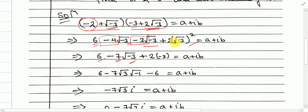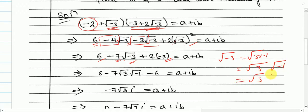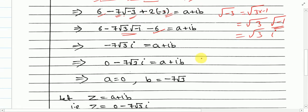And here (√(−3))² simply gives minus 3. Now √(−3) can be written as √3 · √(−1), which is √3 · i. Here, 2 × (−3) gives minus 6. Then plus 6 and minus 6 gives 0. And here we have minus 7√3 · i, since √(−1) = i.